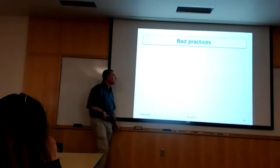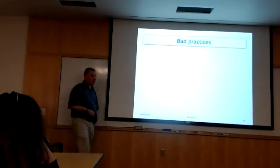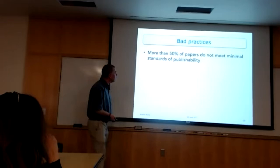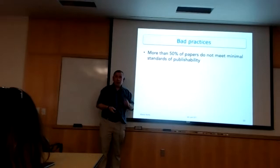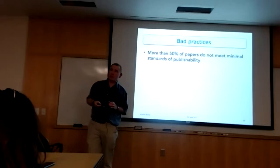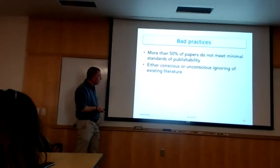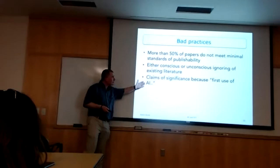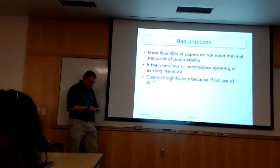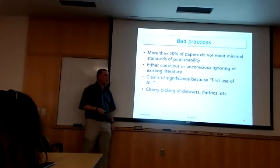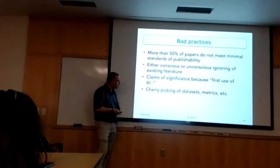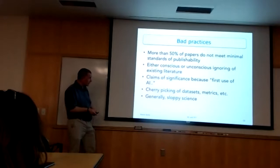The last thing I want to mention is the bad — I can't resist. You see a lot of stuff coming out at the moment. I get a lot of papers to referee from many different fields — at least half of them, maybe 70%, are sufficiently bad on the face of them that they shouldn't be published. The authors have not done basic work to meet what I would normally call minimal standards. There's a huge amount of missing existing literature, lots of claims of significance because it's 'the first use of AI,' lots of cherry picking of datasets, metrics, and various things where you can choose how you measure to make sure you get the desired result. Generally sloppy science is going on.